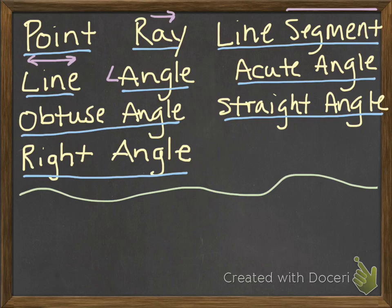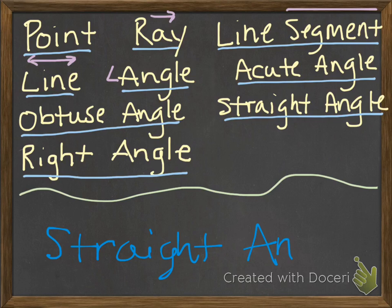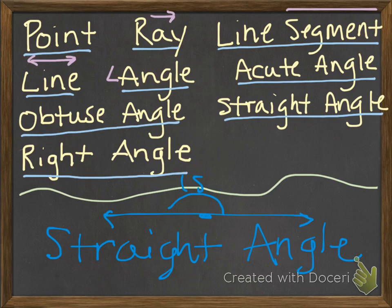I'll count to ten, it'll be quiet, and then I will say the answer and write the answer below that green line. So the first one: an angle whose measure is 180 degrees. Which vocab word from the word bank am I talking about? If you said straight angle, you are correct — that measures exactly 180 degrees.